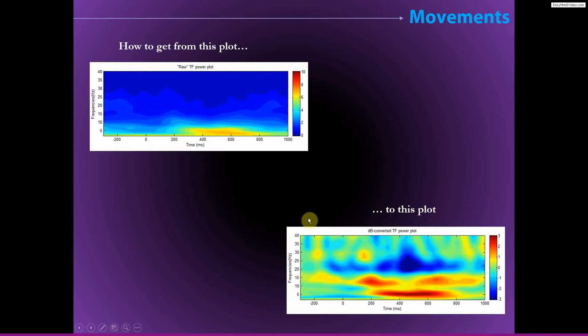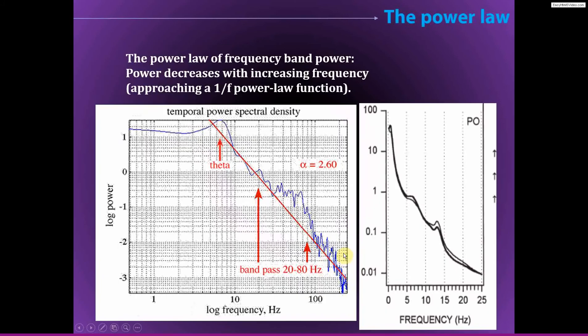So why do we need this normalization and how do we get there? The main reason why we need this normalization is because of something called the power law, power law scaling. This is a little bit confusing because we have the power law and then we have time-frequency power, and those things aren't entirely related to each other, although I guess they are a bit related. But the idea of the power law is that the amplitude of frequency band specific activity generally decreases with increasing frequency.